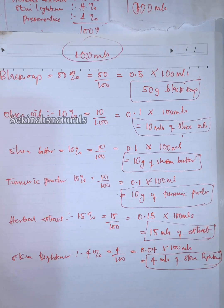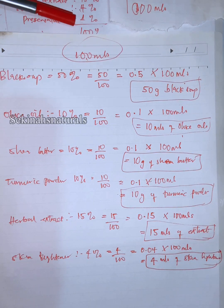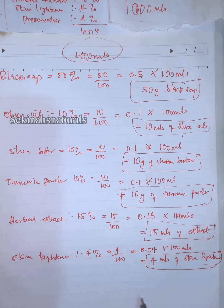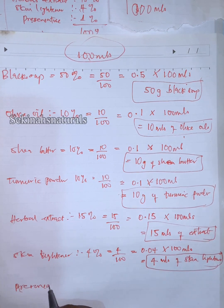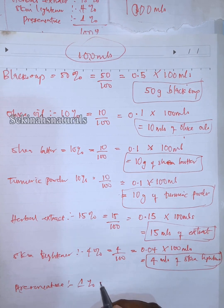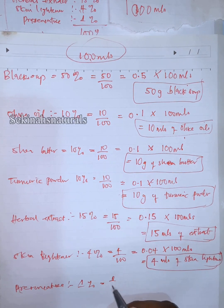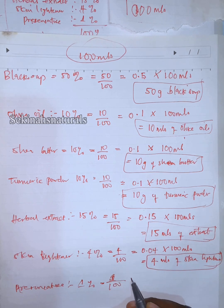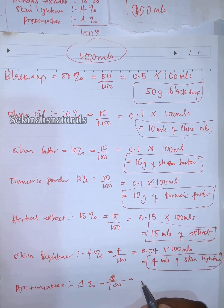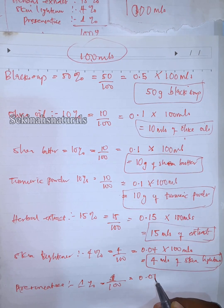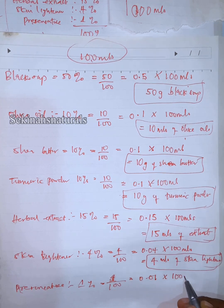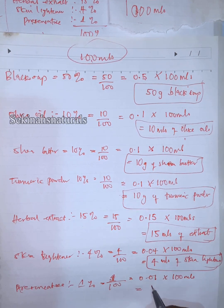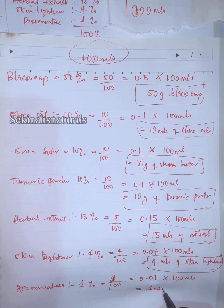That gives us 1 mil. The recipe calls for 1% preservative. So for preservative, 1% is 1 over 100, which is 0.01, times 100 mils, and that gives us 1 mil of preservative.